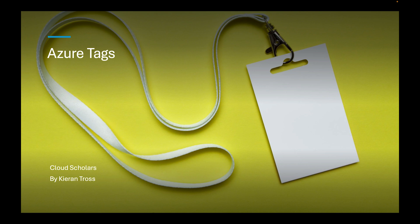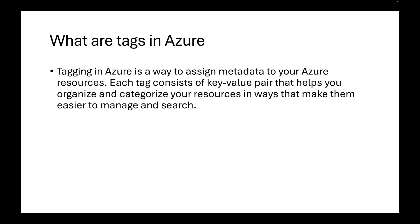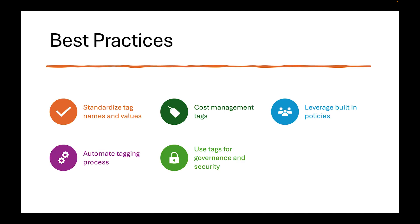Let's start off by defining what tags are. Tagging in Azure is a way to assign metadata to your Azure resources. Each tag consists of key-value pairs that help you organize and categorize your resources in ways that make them easier to manage and search. Here are some best practices for tagging.